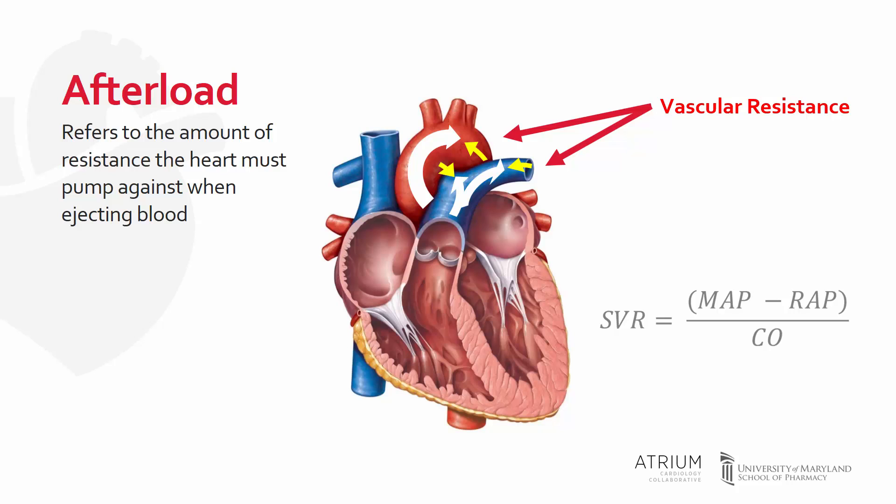equals the mean arterial pressure, or MAP, which represents the pressure of the arterial system, minus the right atrial pressure, or RAP, which represents the pressure exerted by venous return. All that is divided by blood flow, otherwise known as cardiac output.